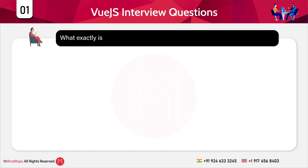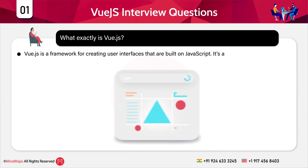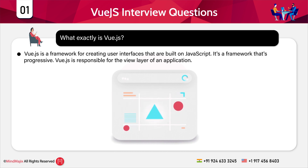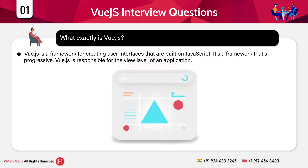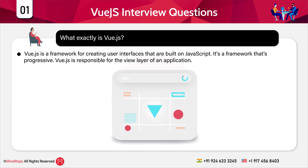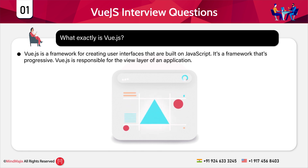The first question is: what exactly is Vue.js? Vue.js and Vue.js are one and the same thing. Vue.js is a framework for creating user interfaces that are built on JavaScript. It is a progressive framework responsible for the view layer of an application. It may be used to create single-page applications and handles high-level issues like fast DOM rendering, reactive state management, client-side routing, and server-side rendering.